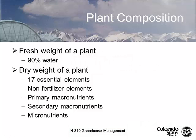Plant nutrition. You've had a lot of this already in BZ120 and in plant physiology, so this is basically a refresher. Like every other organism on this planet, plants are about 90% water. Depending on the textbook, there are between 16 and 19 essential elements for plant growth. We're going to talk about 17 here.